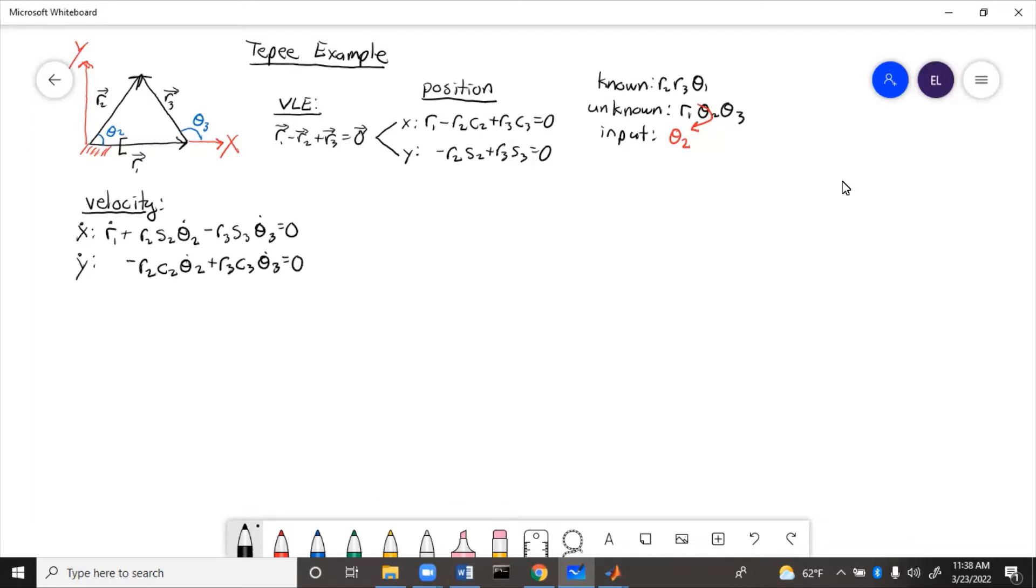So now we've got velocity, we need to put it into matrix form. So matrix form is J times theta dot equals B. Now theta dot is just the unknowns, which are R1 dot and theta 3 dot.